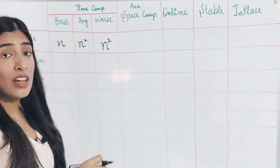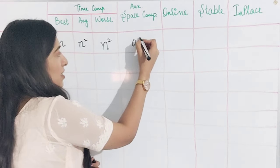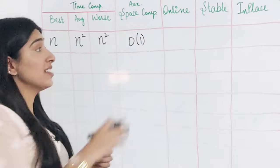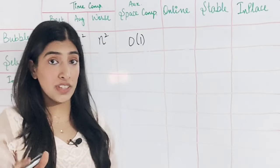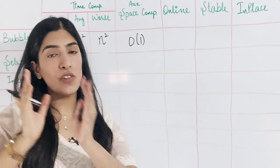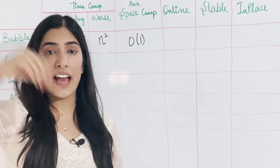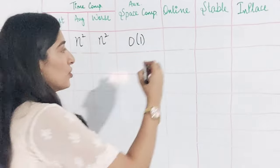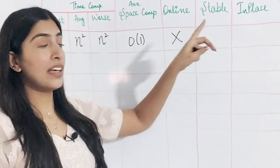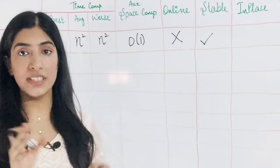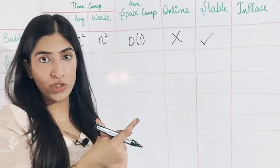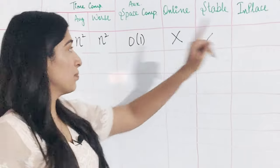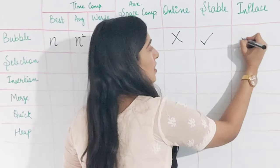Worst case is O(n²). Are we using any extra space? No — space complexity is O(1) because we do the swapping in the array itself without using any extra space. Is it online? No — if we add new data in the middle, elements have already bubbled up to their position and adding more will mess things up. Is it stable? Yes — if there are two elements with the same value, we are not going to swap them, so they remain in the same order. Is it in-place? Yes, since space complexity is O(1).